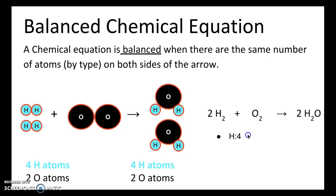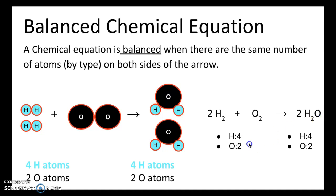On the product side, we have two H2O. Starting with hydrogen: take the coefficient two, multiply it by the subscript two — two times two gives you four hydrogens. That subscript is just for the hydrogen, so we repeat for oxygen. The subscript of oxygen — if there's no number written, it's an invisible one — so it's two times one, which gives you two. From this tally, on the reactant side we have four hydrogens and on the product side we have four hydrogens, so they balance. On the reactant side we have two oxygens and on the product side we have two oxygens, so they match as well.